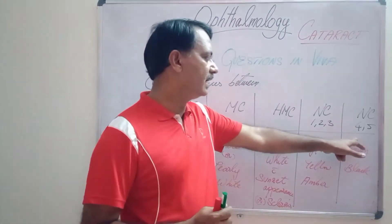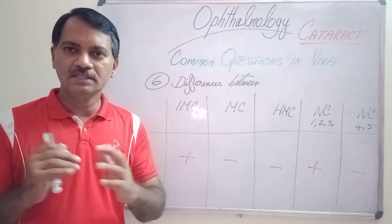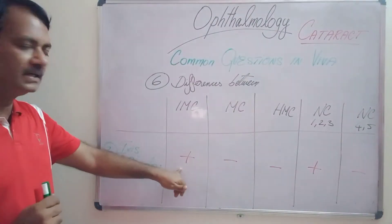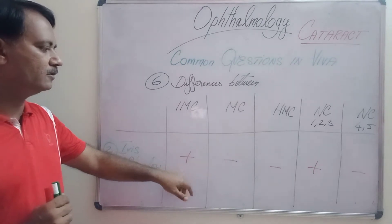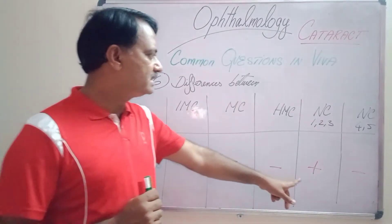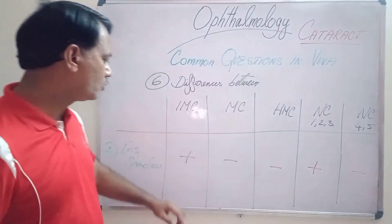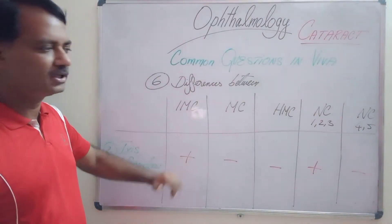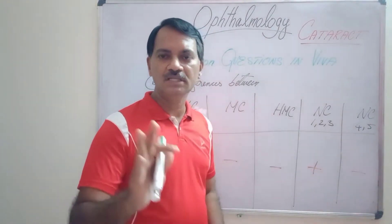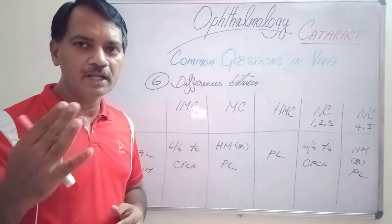In nuclear cataract grade 4 and 5, the lens may be brown or black in colour. As far as the iris shadow is concerned, it will be present in immature cortical cataract. It will be absent in mature and hypermature cataract. It will be seen in nuclear cataract grade 1, 2 and 3 but not as much appreciated as in immature cortical cataract. In nuclear cataract grade 4 and 5, you will not see any iris shadow.